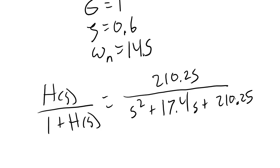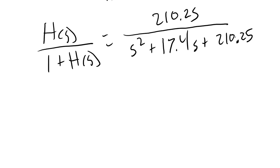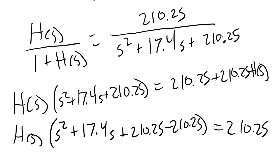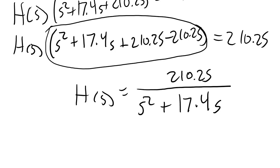Next, I want to solve for h of s. First, I'll multiply both sides by one plus h of s, and I'll also multiply both sides by s squared plus 17.4 s plus 210.25. Next, I'll gather the h of s terms together on one side of the equation. Finally, I'll divide both sides by this term in order to get h of s by itself.